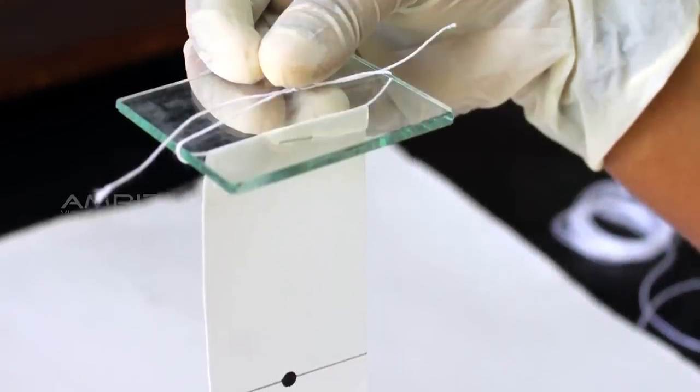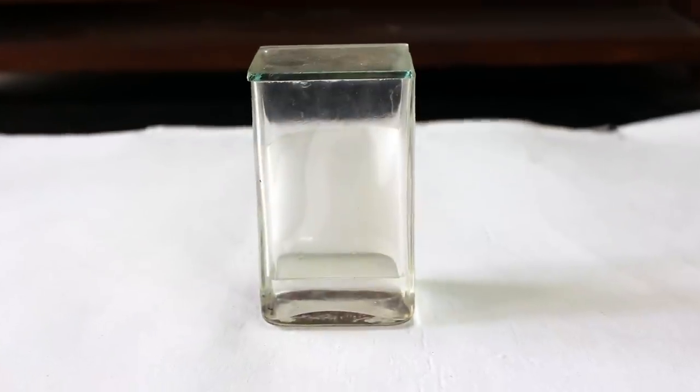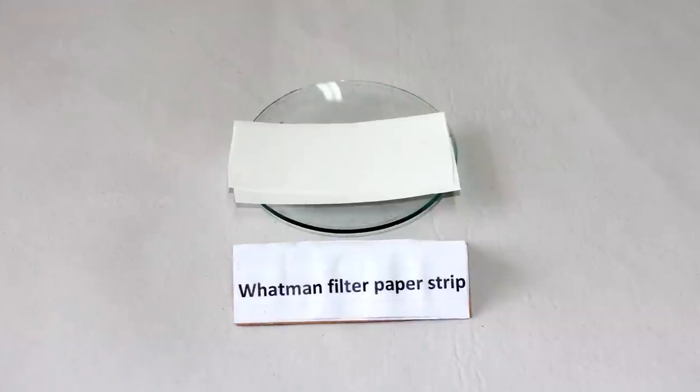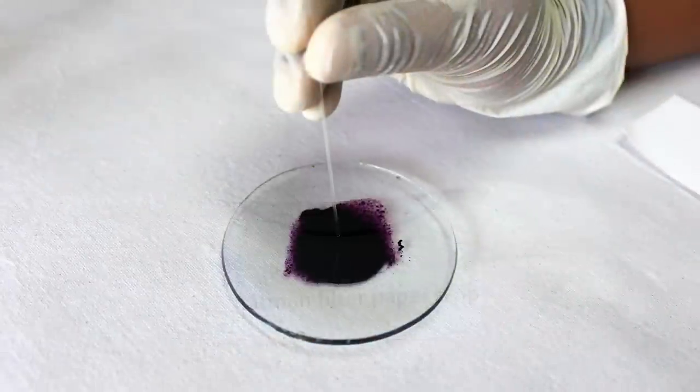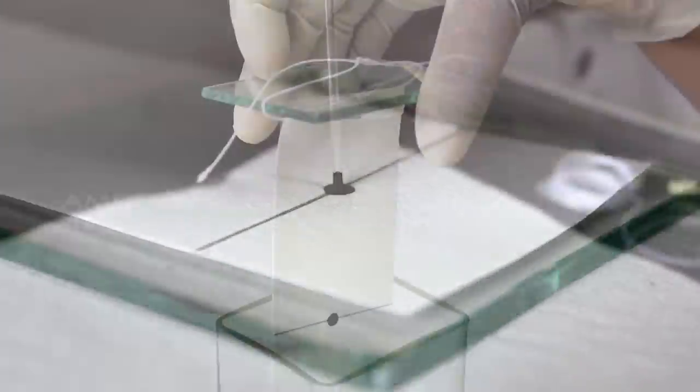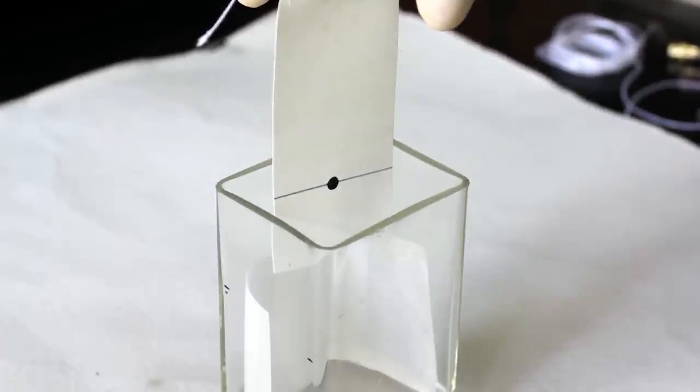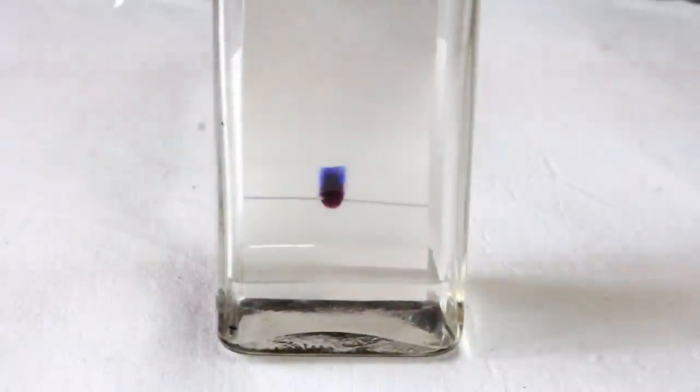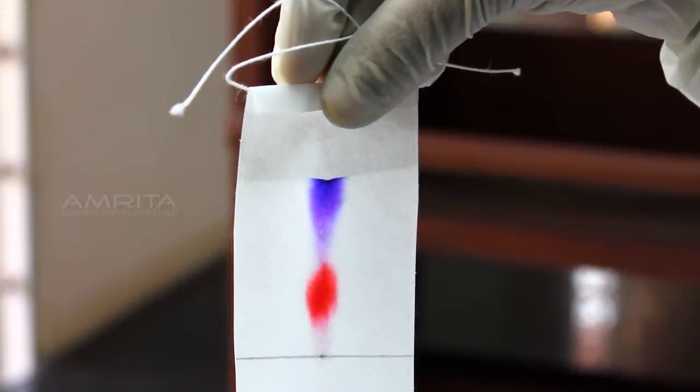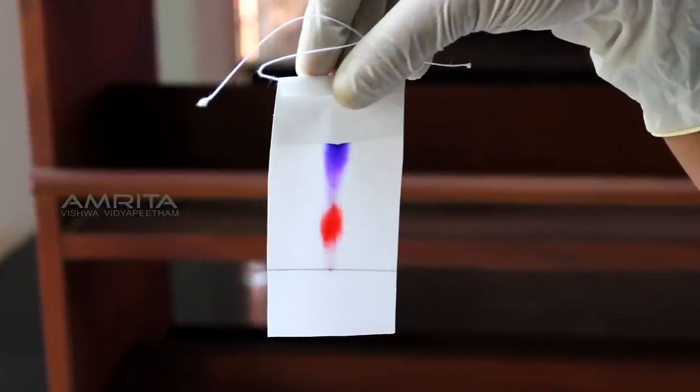Paper chromatography uses paper as the stationary phase and a liquid solvent as the mobile phase. In paper chromatography, a spot of the mixture is put on the paper and the paper is carefully dipped into a solvent. The solvent rises up the paper due to capillary action and the components of the mixture rise up at different rates and thus get separated from one another.